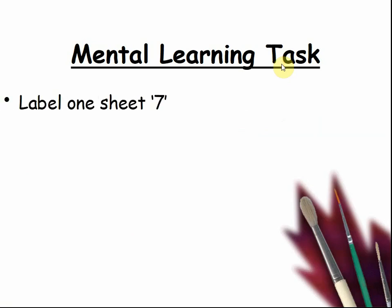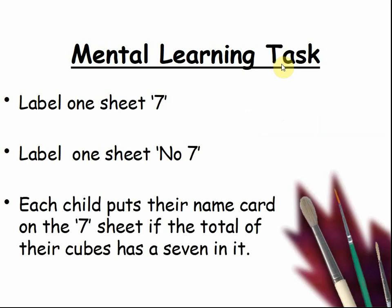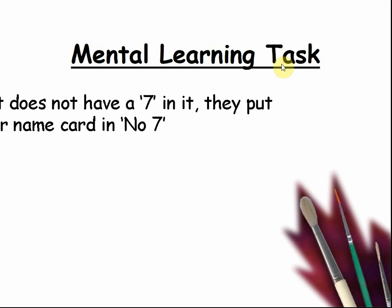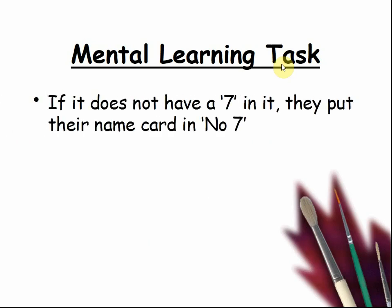Label one sheet 'seven' and one sheet 'no seven'. Each child puts their name card on the seven sheet if the total of their cubes has a seven in it, such as 17, 37, 27, or 7. Otherwise, if it does not have a seven in it, they put their name card in 'no seven'.